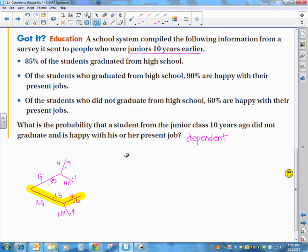And what we have here is just like we talked about independent, the probability of not graduating and happy. Yesterday, we talked about that. We would just multiply these two. Well, you do multiply them, but the probability of them being happy is dependent on whether or not they graduated. So when you write the second part, you write the probability of them being happy given that they did not graduate. In which case, the probability that they did not graduate is 0.15, and the probability that they were happy given the fact that they did not graduate is 0.6.